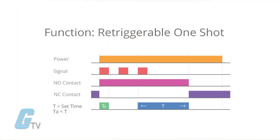The one shot timer can also be available as a retriggerable one shot where the timing begins every time the signal is introduced. When the contacts are in the on state, application of another signal input will reset the timer and timing will begin again.